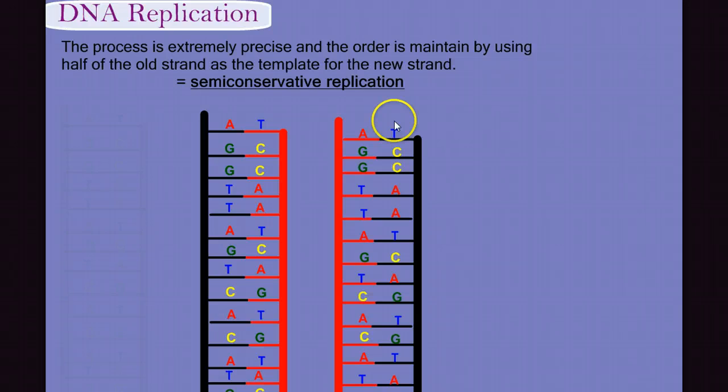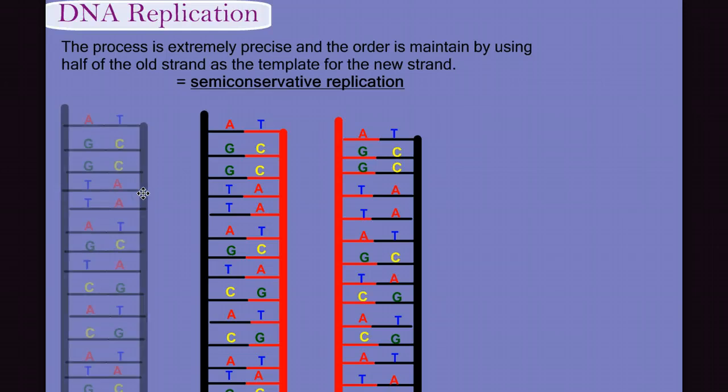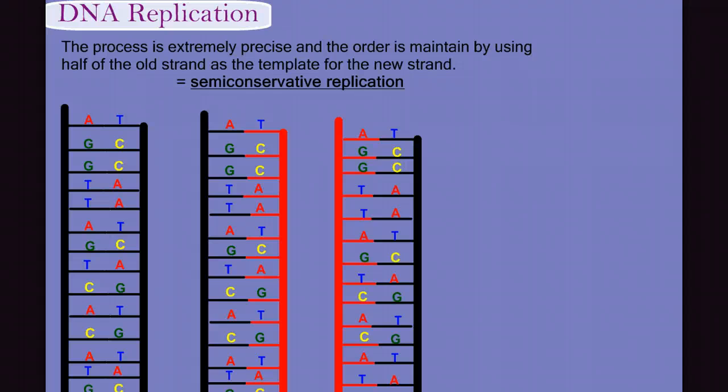This ensures the conservation of the code. Because we're building off an existing template and because we know that we have a very rigid pairing requirement, every thymine has to have an adenine, every cytosine has to have a guanine, we get two molecules that are identical to each other in DNA code. And they're also identical to the original ladder that we had. Using half of the parental strands to guide the construction of the new side and following our rules of base pairing ensures the accuracy of the code, except when it doesn't. And what happens when there's an incorrect base pairing?